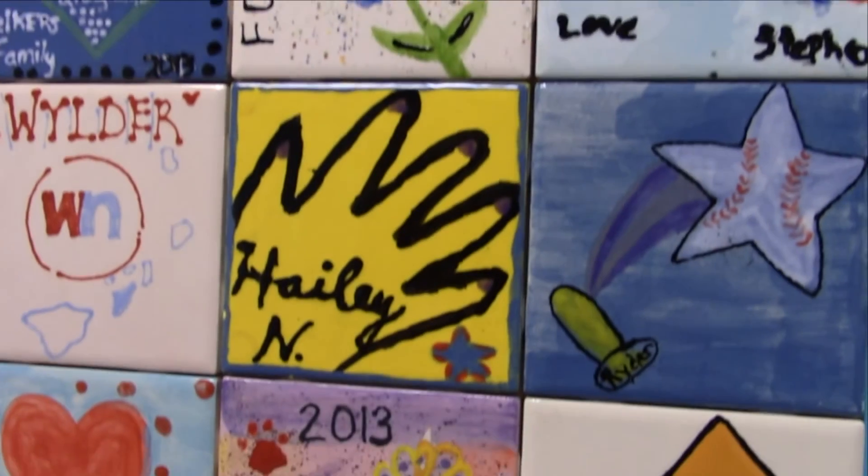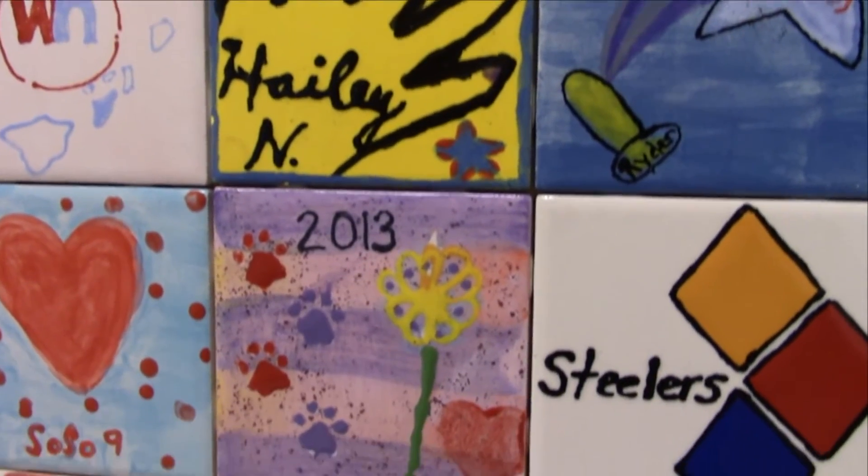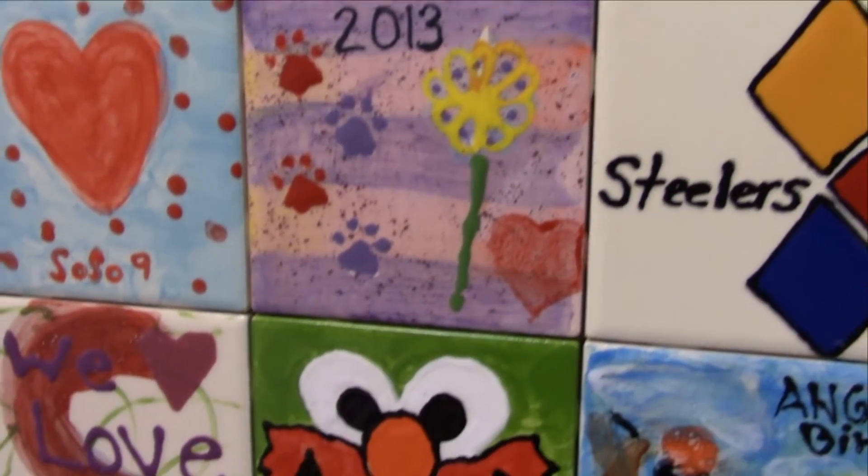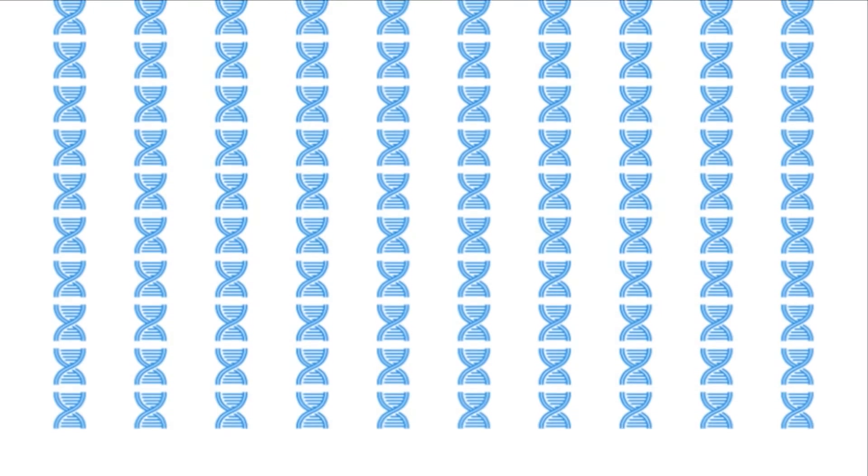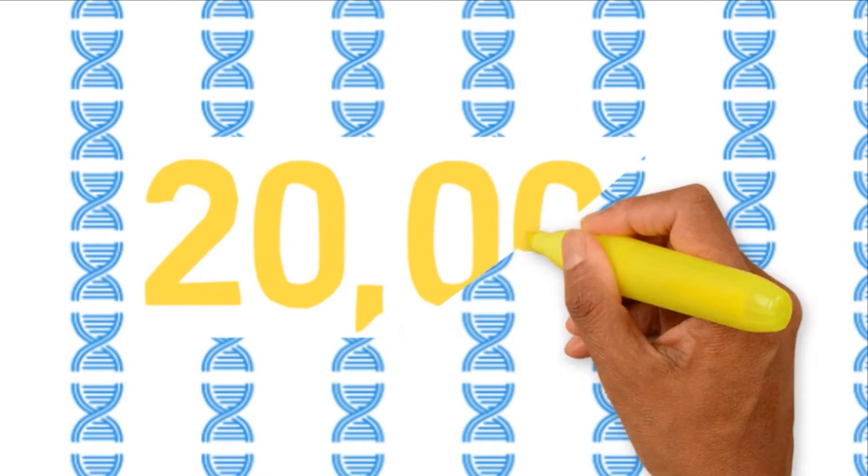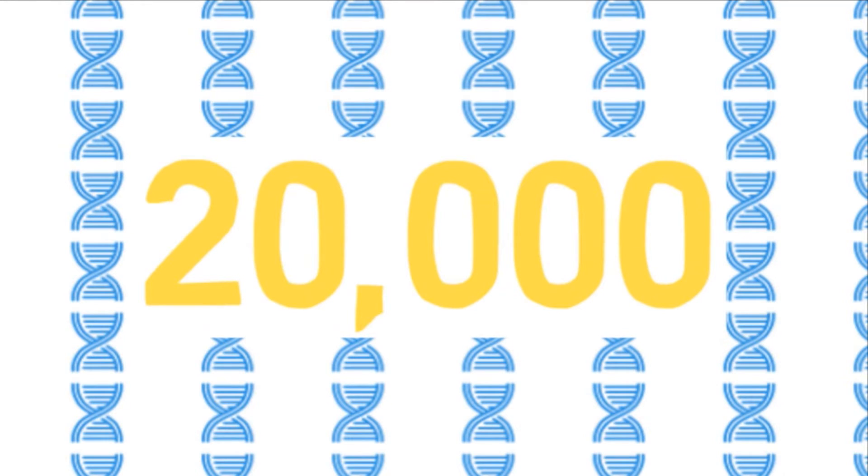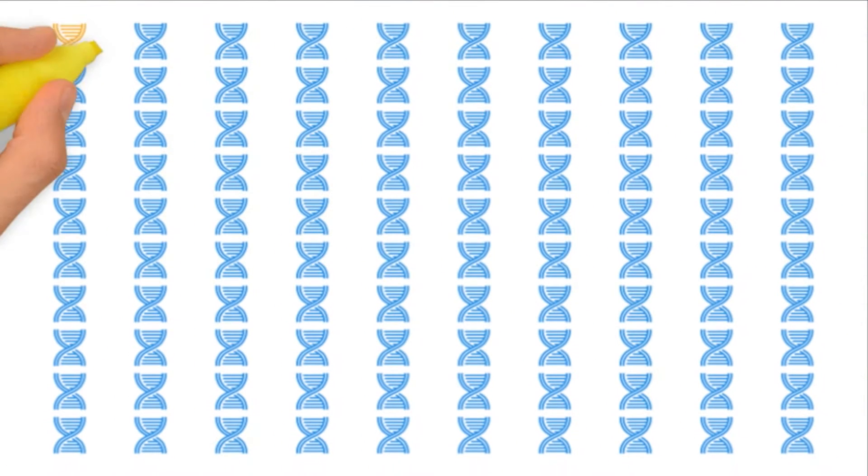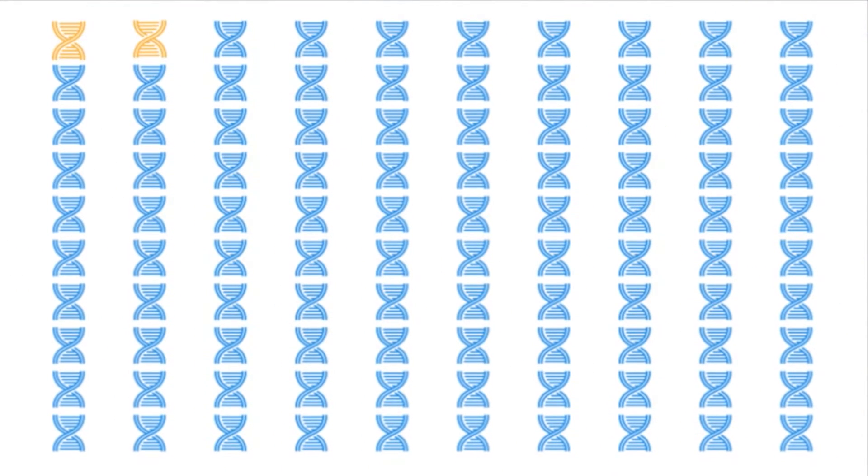At the C4RCD, hundreds of families and counting have been sequenced. Whole exome sequencing looks at over 20,000 different genes. Can you believe that is only 1-2% of your genome?